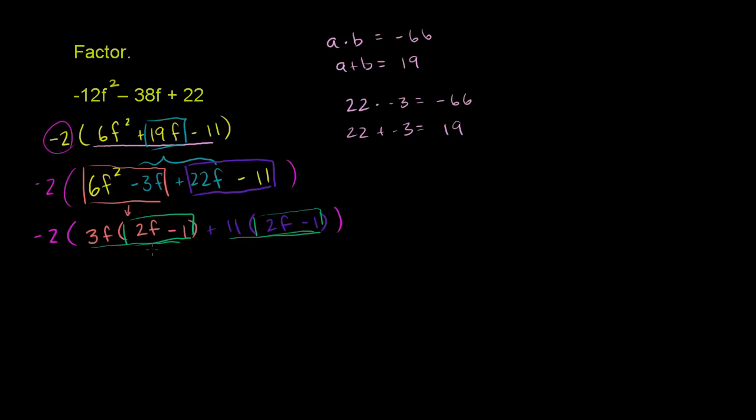This whole thing is just an exercise in the reverse distributive property. So let's factor that out. You have (2f - 1) times that 3f, and then times that +11, so (2f - 1)(3f + 11).